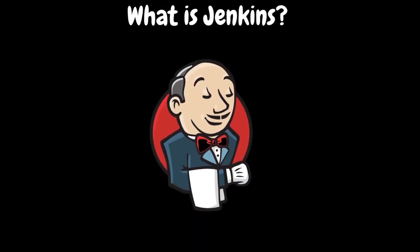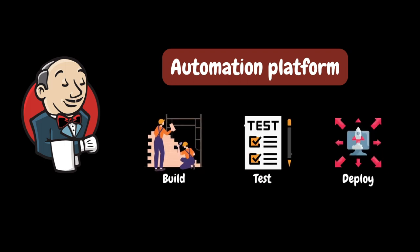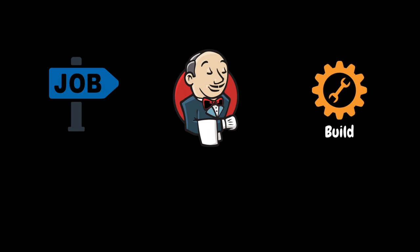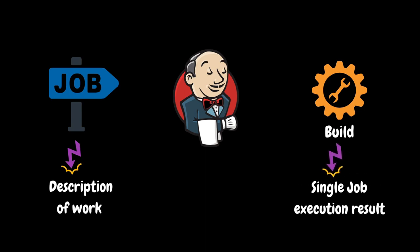So what is Jenkins? Jenkins is an automation platform that allows you to automate all sorts of tasks related to building, testing, and delivering or deploying the software. In Jenkins, there are two important terms that we need to be aware of, and they are job and build. A job is a description of work that Jenkins should perform, and a build is the result of a single execution of a job.